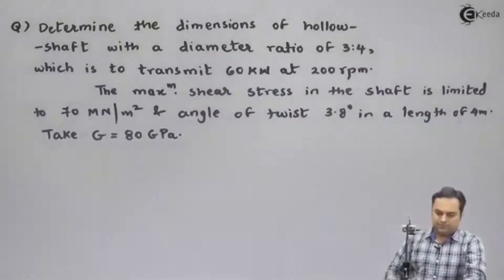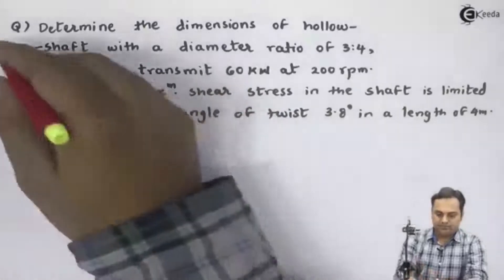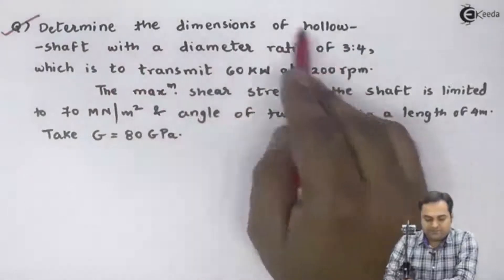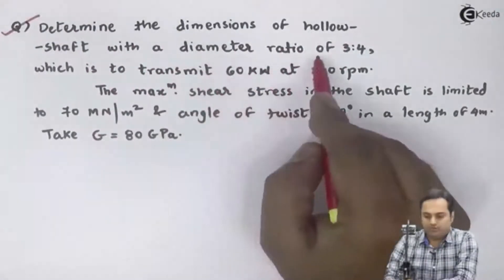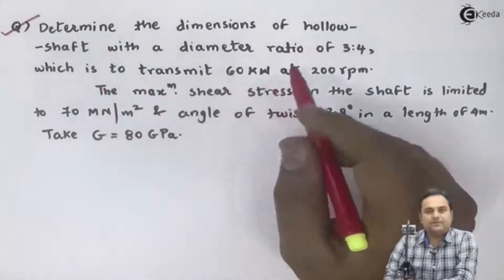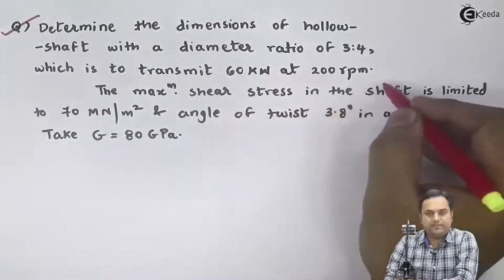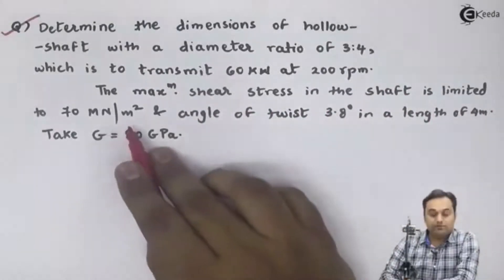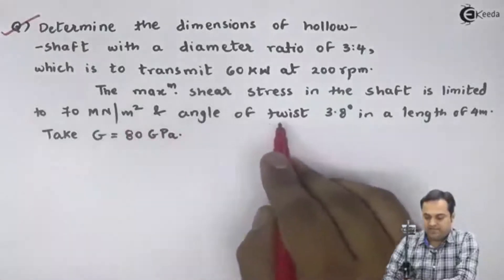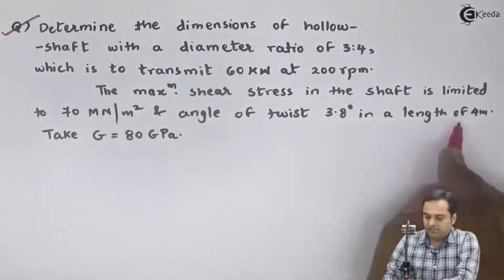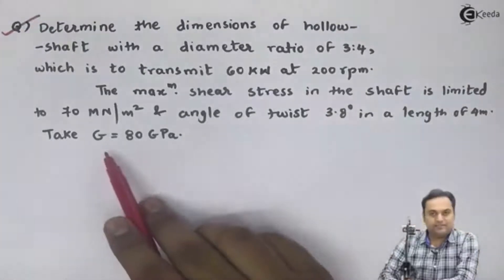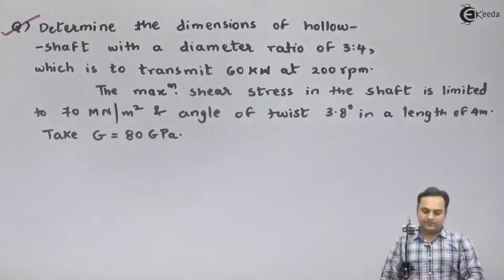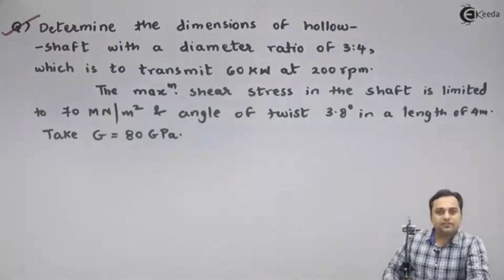Let us take some problems on torsion. Here I am marking this question. Determine the dimensions of a hollow shaft with a diameter ratio of 3 is to 4, which is to transmit 60 kilowatts at 200 rpm. The maximum shear stress in the shaft is limited to 70 mega Newton per meter square and angle of twist 3.8 degrees in a length of 4 meters. Take G, that is modulus of rigidity, as 80 GPa.